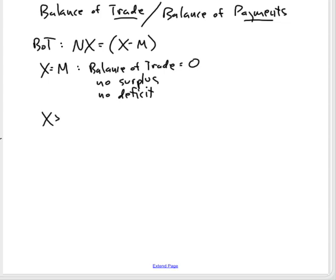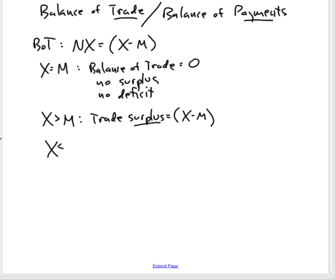If X is greater than M — if the value of exports is greater than the value of imports — then we say there's a trade surplus equal to the difference. If X is less than M, there's a trade deficit.